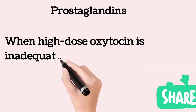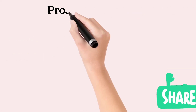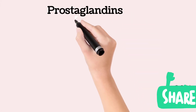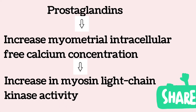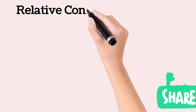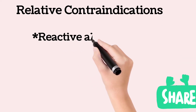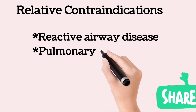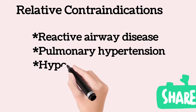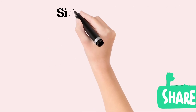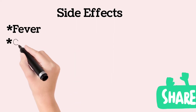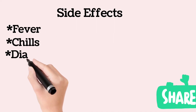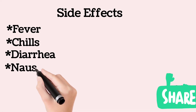Prostaglandins increase myometrial intracellular free calcium concentration, ultimately leading to an increase in myosin light chain kinase activity. They rarely cause bronchospasm, abnormal ventilation-perfusion ratio, increased intrapulmonary shunt fraction, and hypoxemia. Common side effects are fever, chills, diarrhea, nausea, and vomiting, and bronchoconstriction in the case of carboprost.